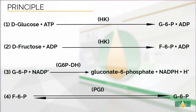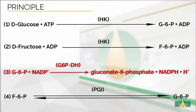These assays are specific for the measurement of D-Glucose and D-Fructose. The principle of the enzymatic reactions involved in the measurement of D-Glucose and D-Fructose is shown in this figure. The enzyme hexokinase simultaneously phosphorylates D-Glucose to glucose 6-phosphate plus ADP, and D-Fructose to fructose 6-phosphate plus ADP. In the presence of the enzyme glucose 6-phosphate dehydrogenase, glucose 6-phosphate is oxidised by NADP+ to gluconate 6-phosphate with the formation of NADPH.